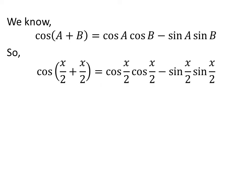If a is equal to half of x and b is equal to half of x, then cosine of half of x plus half of x is equal to cosine of half of x times cosine of half of x minus sine of half of x times sine of half of x.